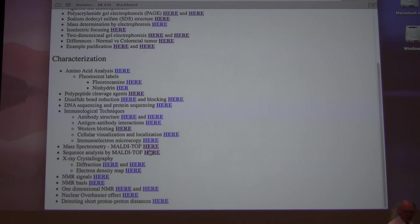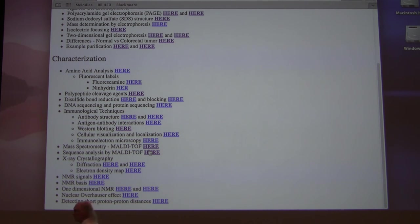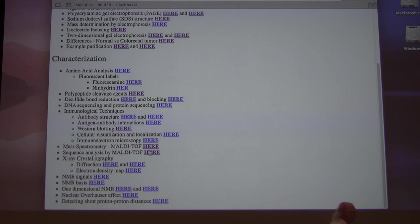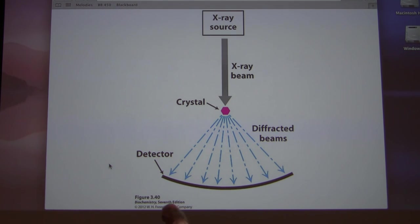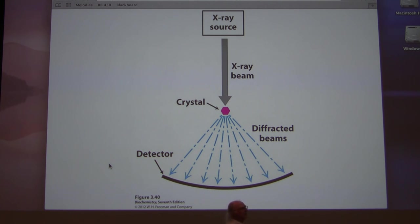The last things I want to mention are a couple of techniques for actually determining protein structure. We know the structure of many proteins — we can't predict it, but we can study the protein and get the structure. Two common techniques are X-ray crystallography and nuclear magnetic resonance. I imagine you've had some exposure to NMR in organic chemistry, though you may not have much exposure to X-ray crystallography.